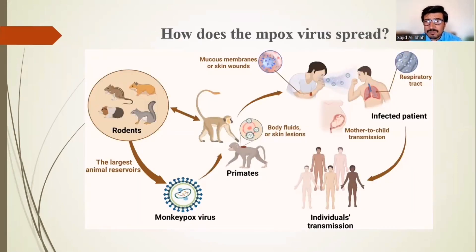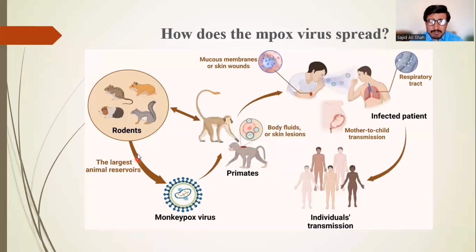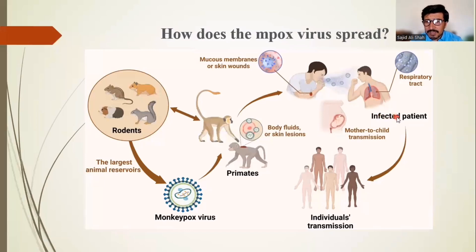Regarding how mpox spreads: the monkeypox virus may be harbored in primates or the largest animal reservoirs — rodents. Rodents can transfer it to primates, and primates can transfer it back to rodents. From these animals' body fluids or skin lesions, the virus can be transferred to humans. Humans can transfer it to other humans through mucous membranes or skin wounds, through the respiratory tract, and a mother can also transfer it to her child during pregnancy.